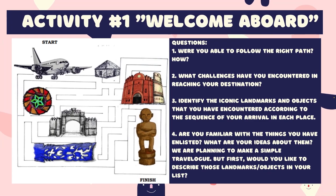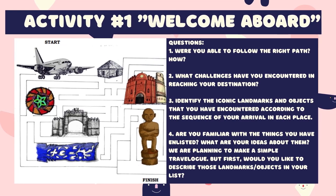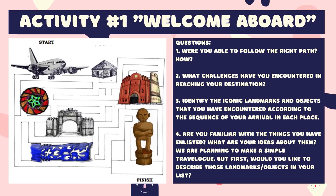Are you ready to answer your activities in Quarter 1 Module 2 Activity Sheet? Now, for your activity number 1, Welcome Aboard — please review your flight plan before starting your journey. Try to follow the flight plan which leads to the different places where you can find some iconic landmarks and objects. Before going to the next places, make sure that you will not use the same path. Good luck! And answer the following questions: 1. Were you able to follow the right path? How? 2. What challenges have you encountered in reaching your destination? 3. Identify the iconic landmarks and objects that you encountered according to the sequence of your arrival in each place. 4. Are you familiar with the things you have enlisted? What are your ideas about them?